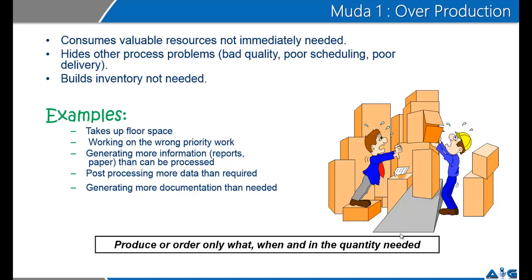Overproduction often hides other process problems like bad quality, poor scheduling, poor delivery, etc. It will end up creating inventory which is not needed. Building inventory adds to another type of waste which we will subsequently discuss. Whenever you overproduce, you will end up taking more floor space, working on wrong priority work, generating more information, more reports, more papers, and more documents than necessary. You must ensure that you produce or order only what, when, and in the quantity needed.